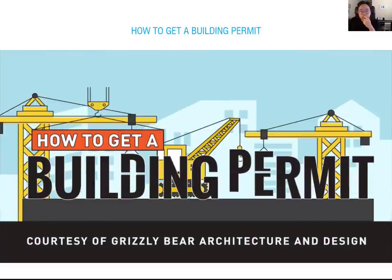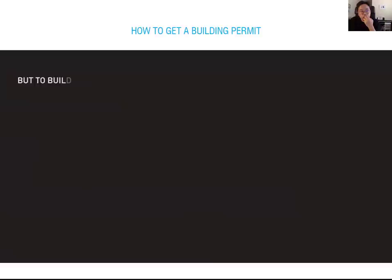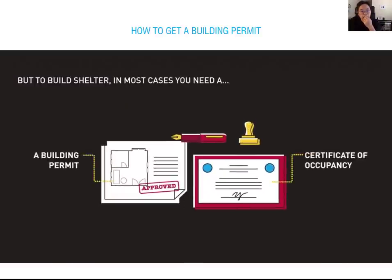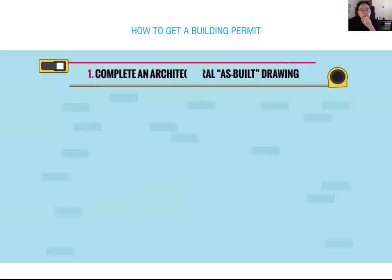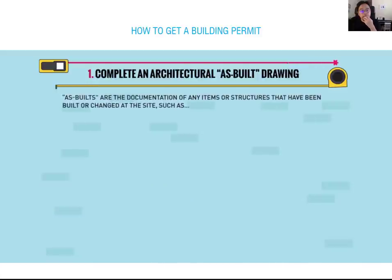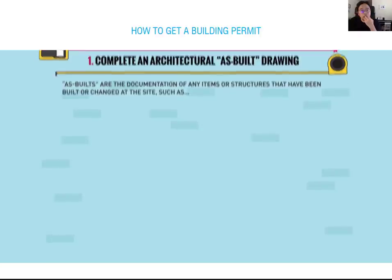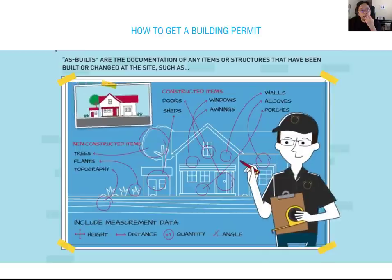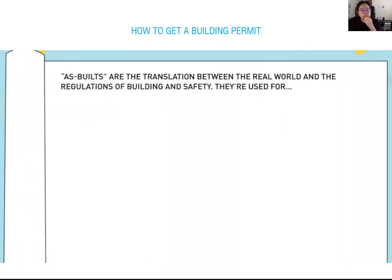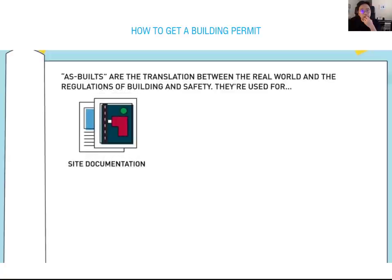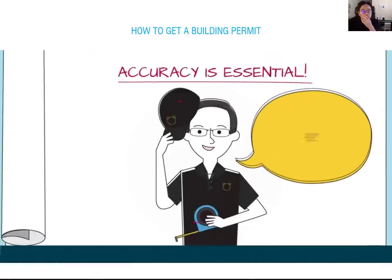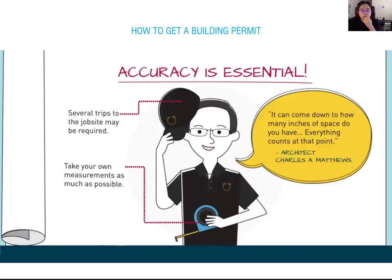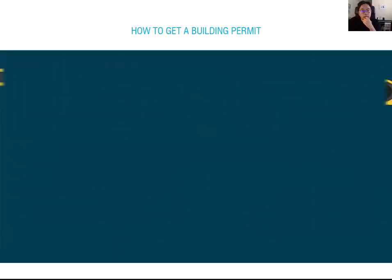How to get a building permit. Shelter is one of our most basic needs as human beings. But to build shelter in most cases, you need a building permit and certificate of occupancy. Step one: complete an architectural as-built drawing. As-builts are the documentation of any items or structures that have been built or changed at the site, such as walls, windows, awnings, plants, and other topography. As-builts are the translation between the real world and the regulations of building and safety, used for site documentation, architectural drawings, and archiving. Accuracy is essential.